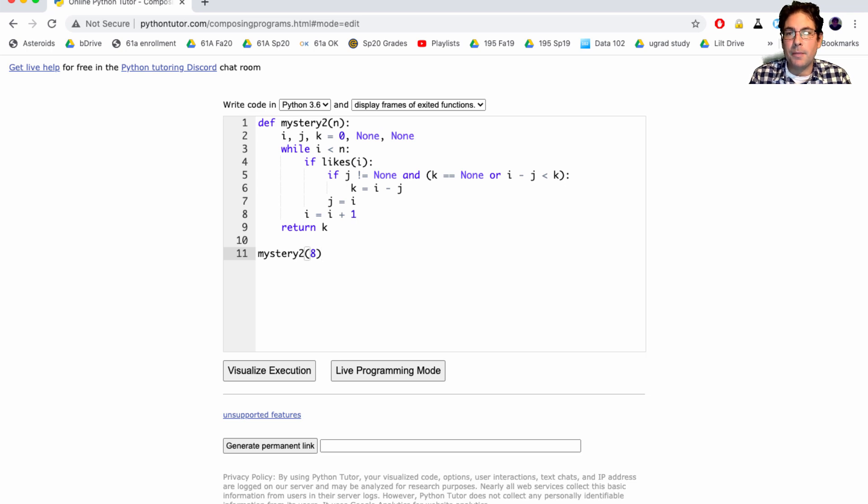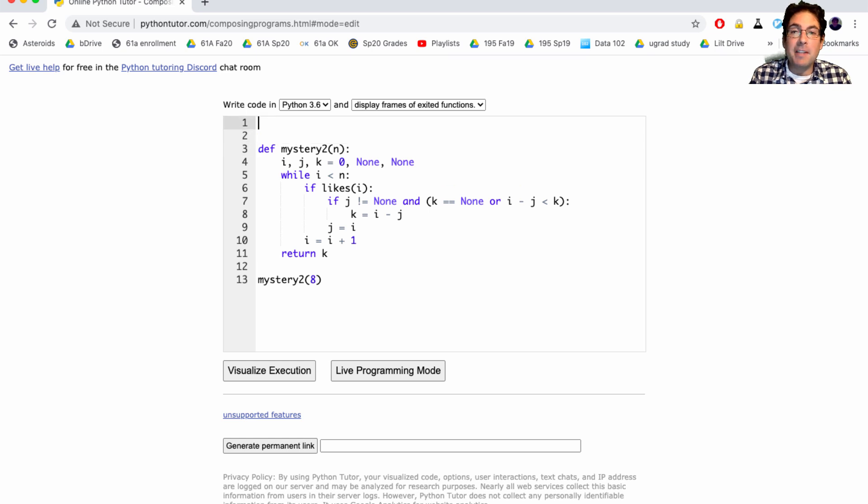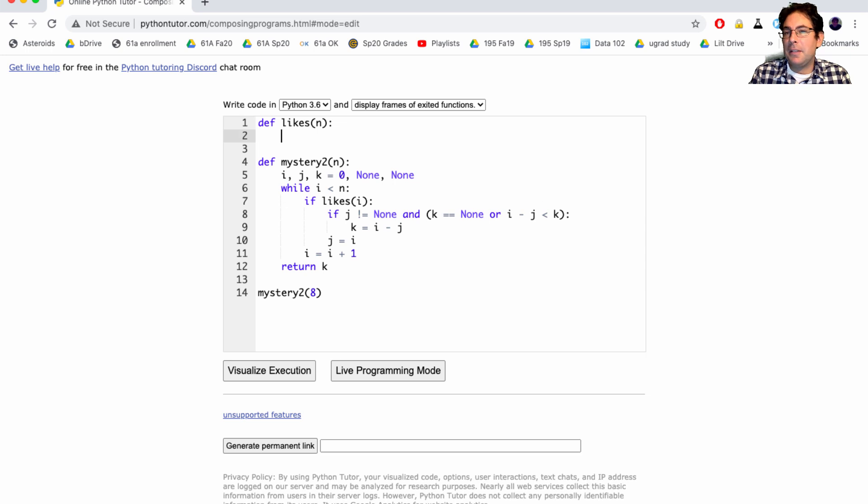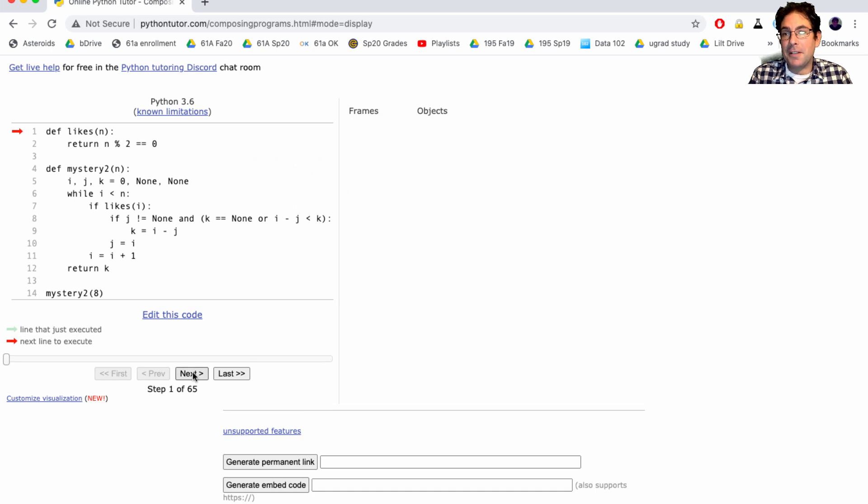But we also need a definition for likes that we can actually implement. So let's pick something really simple. George likes even numbers let's say. We might have to change this later because we're just experimenting. But at least we can let Python do some of the work of telling us what's going on.